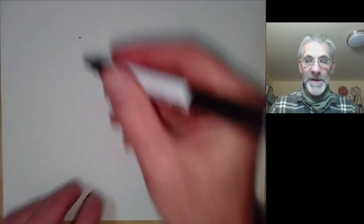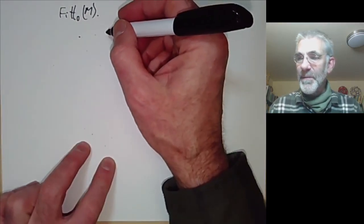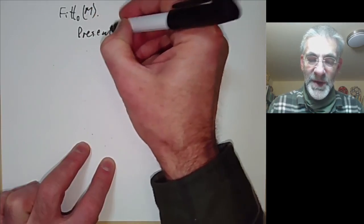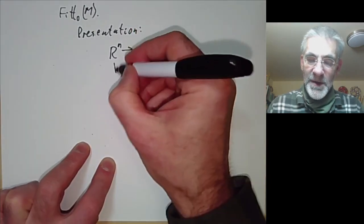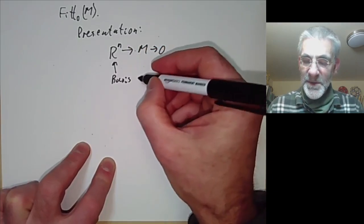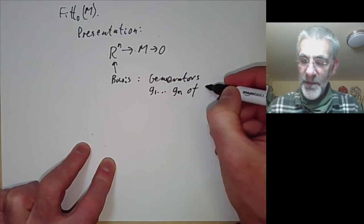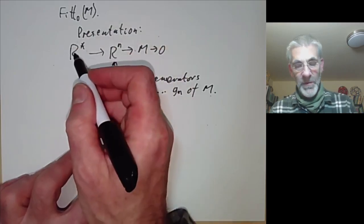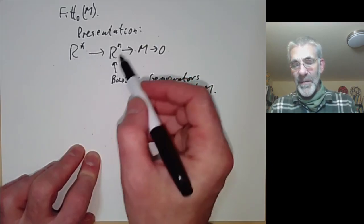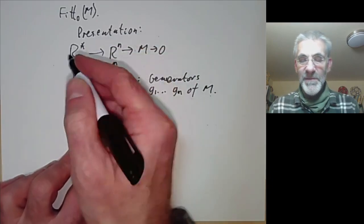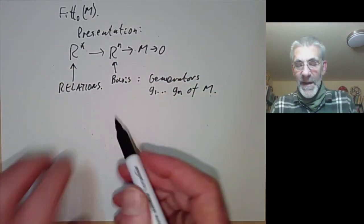Let's start by defining the zeroth fitting ideal of a module M. Since M is finitely generated, it has a presentation — meaning first of all there's a surjective map from R to the N onto M, with a basis corresponding to generators G1 up to Gn of M. Then we need some relations, and there may be an infinite number of them. Remember we're working over a ring that might not be Noetherian, so there's no particular reason why the kernel should be finitely generated. So we get a possibly infinitely generated module of relations.